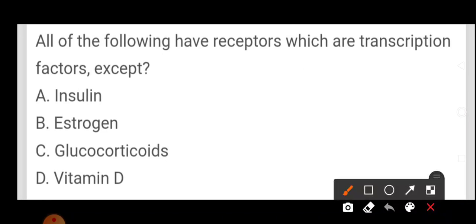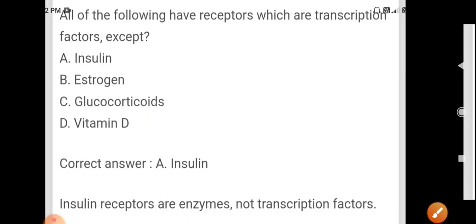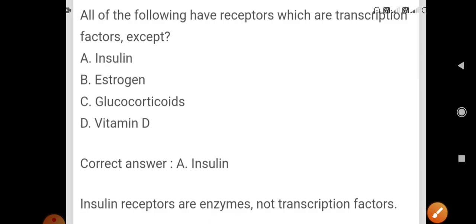All of the following have receptors which are transcription factors except insulin, estrogen, glucocorticoids, vitamin D. Which one is not having transcription factor? Answer here is insulin. Because insulin is an enzyme. Insulin receptors are enzymes, not transcription factors.